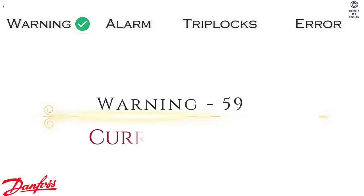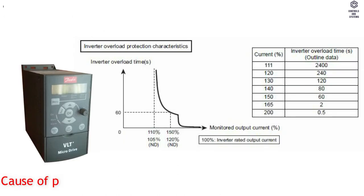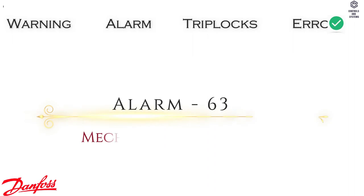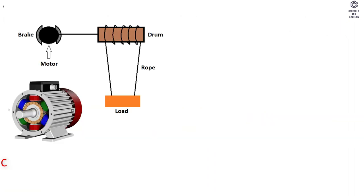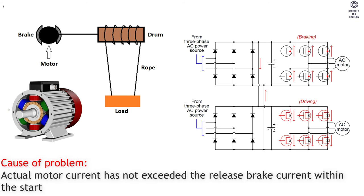Warning 59: Current Limit. Cause of Problem — frequency converter overload. Alarm 63: Mechanical Brake Low. Cause of Problem — actual motor current has not exceeded the release brake current within the start delay time window.